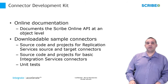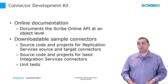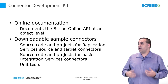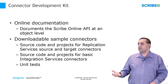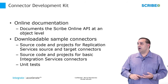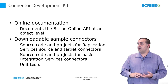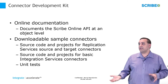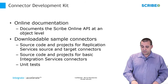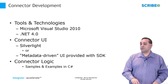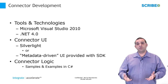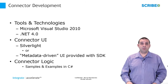The Connector Development Kit consists of online documentation and online samples. We talk about the Scribe Online API at an object level. We have several downloadable sample connectors — replication services connectors, integration connectors, and integration services connectors. We have source code and projects for basic integration services, and we have unit test samples as well. We also have source code for our GoToWebinar connector as a real-world sample, as opposed to a more simplistic sample.